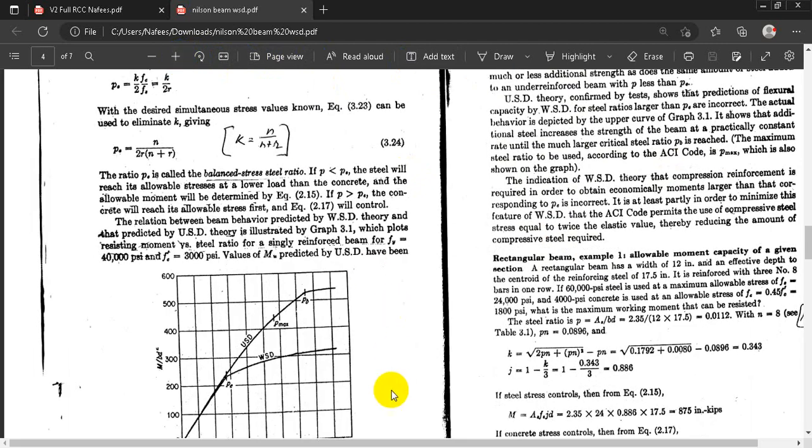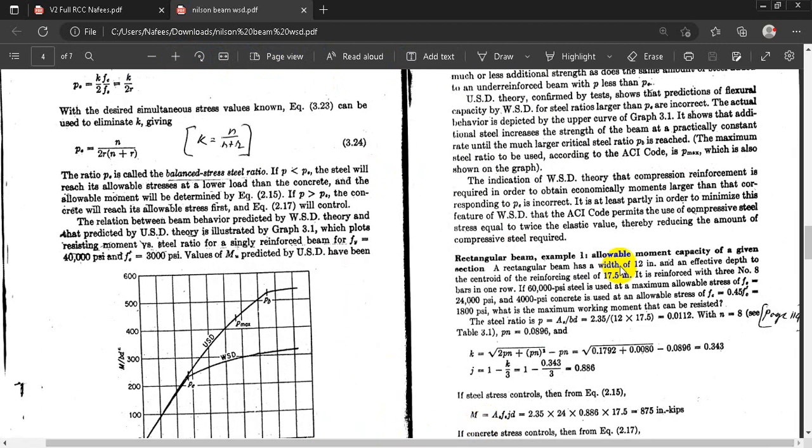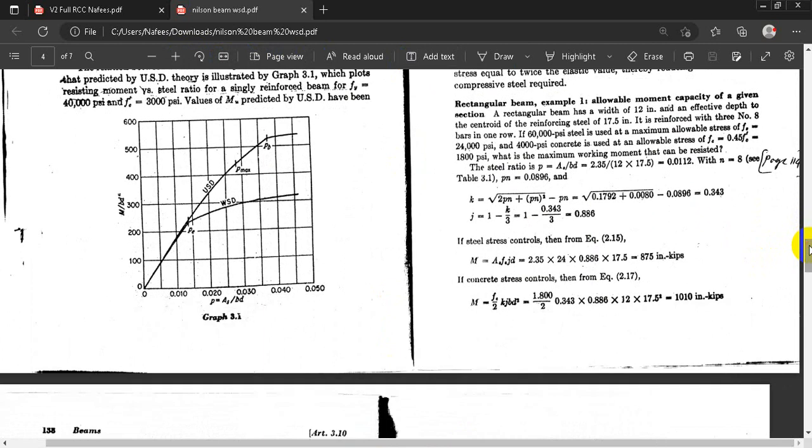Example 1. Allowable moment capacity of a given section. Allowable moment capacity. This is the USD method. A rectangular beam has a width of 12 inches and effective depth to the center of the reinforcement steel of 17.5 inches. Effective depth is 17.5 inches.